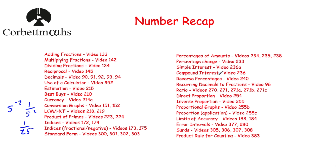Reverse percentages: if something goes up by 7%, you would have 107. You then know that 107 equals a certain amount, divide both by 107 to find 1%, then times by 100 to find the original amount. Alternatively, divide by the multiplier.